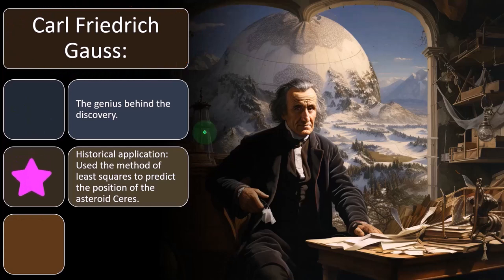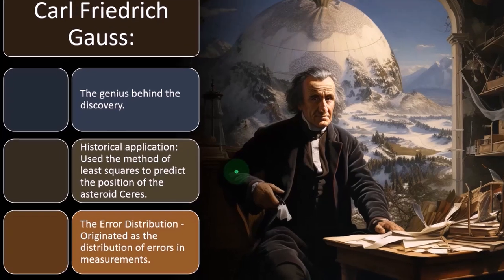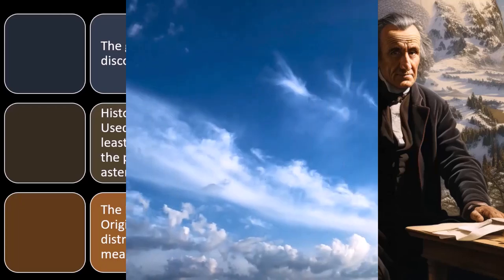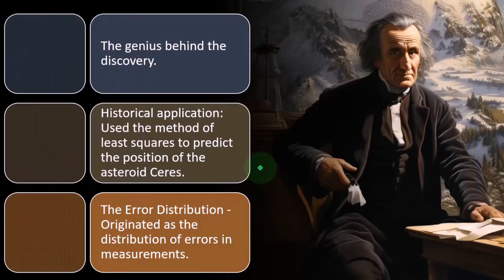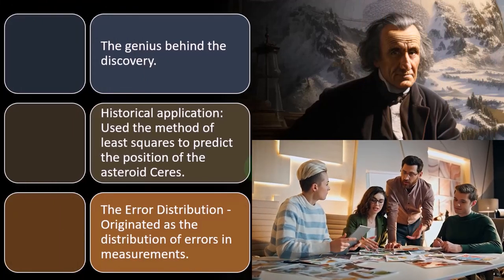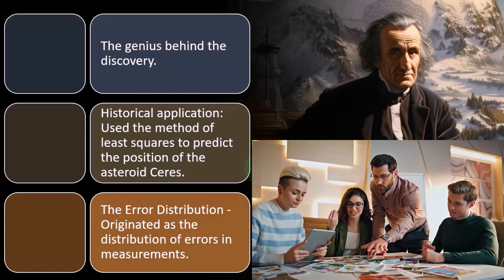Historical application: used the method of least squares to predict the position of the asteroid Ceres. So the error distribution originated as the distribution of errors in measurements. In other words, one of the early contexts of the use of the normal distribution was for errors. In other words, when you make predictions...